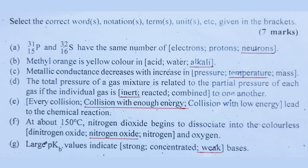We have the indicators that we use: the acid condition, the base condition, and the endpoint condition. We have orange in the acid condition. Number C: Metallic conductance decreases with increase in temperature.